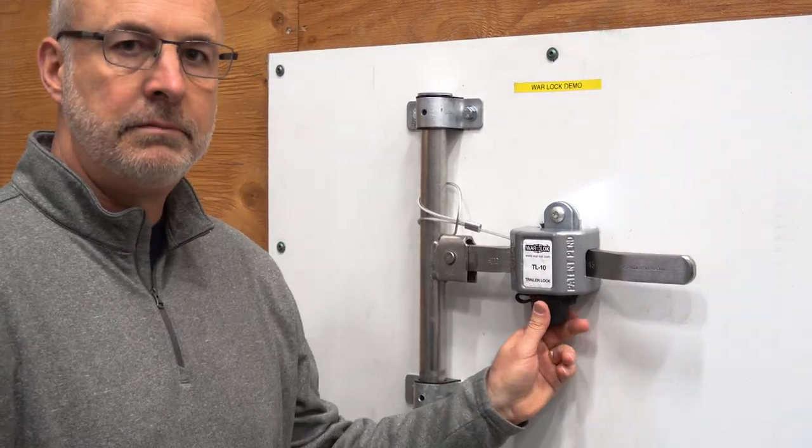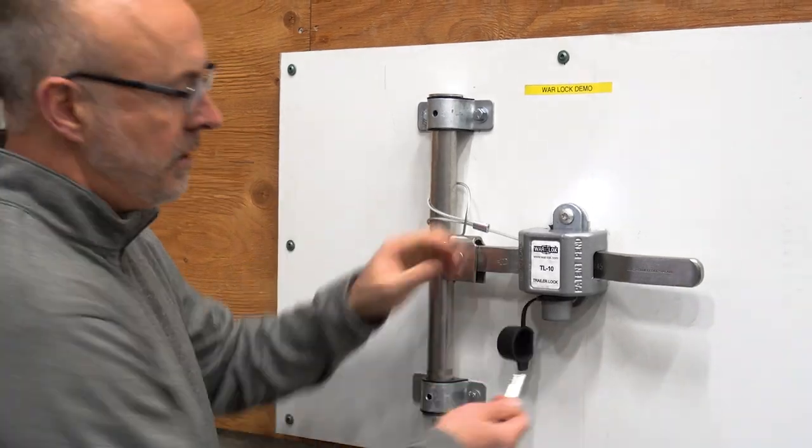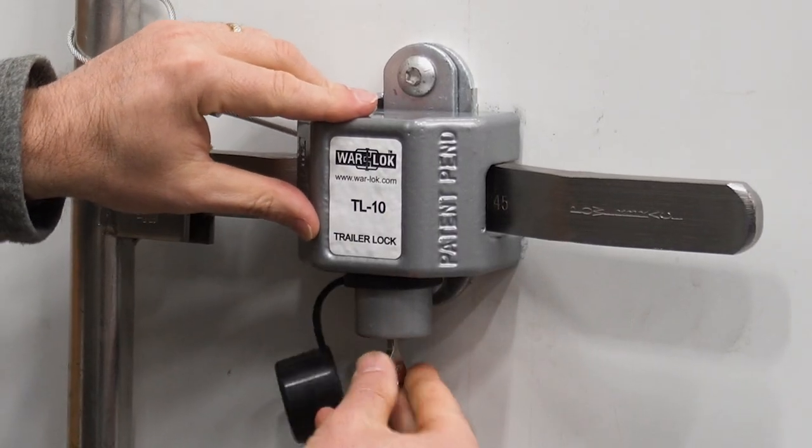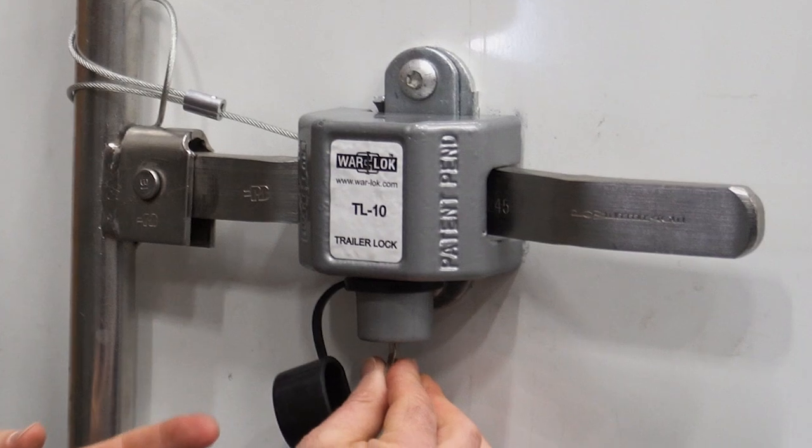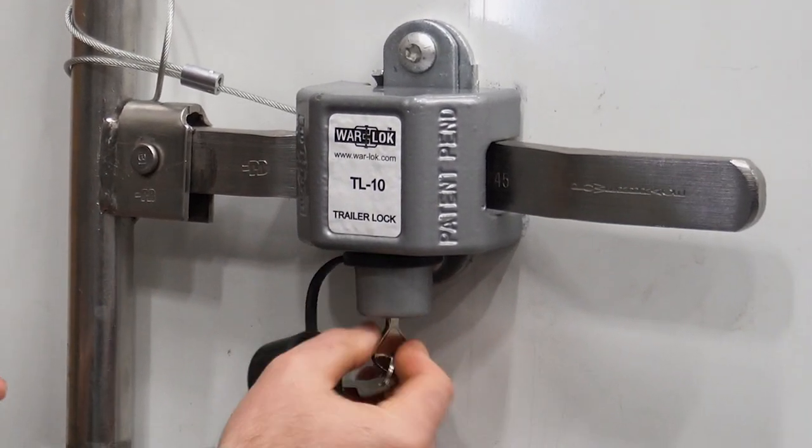First of all, remove the black cap. Next, insert the key. Make sure you do not push up on the key, as this will prevent you from properly unlocking it. Turn the key all the way to the right.